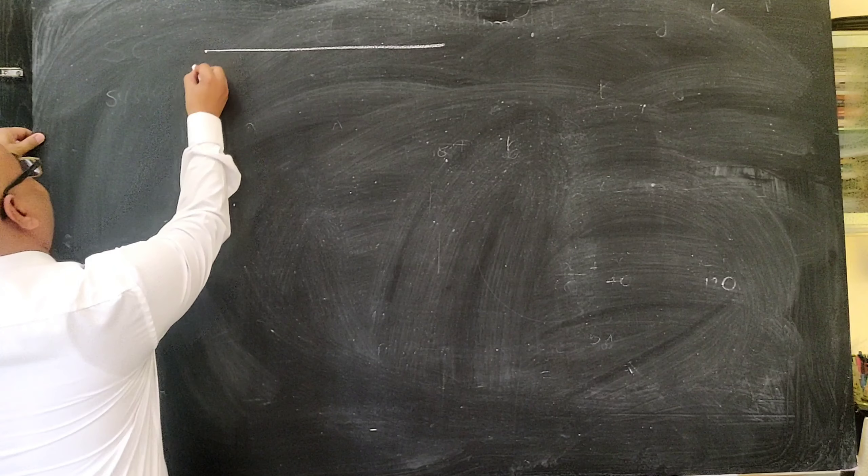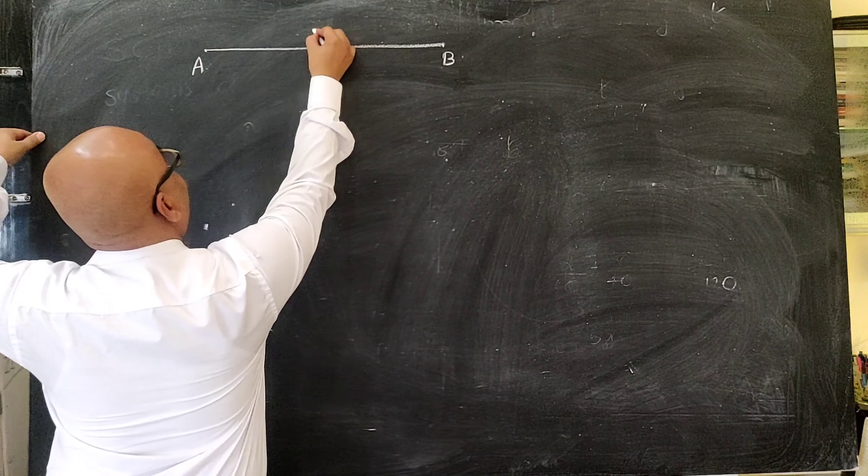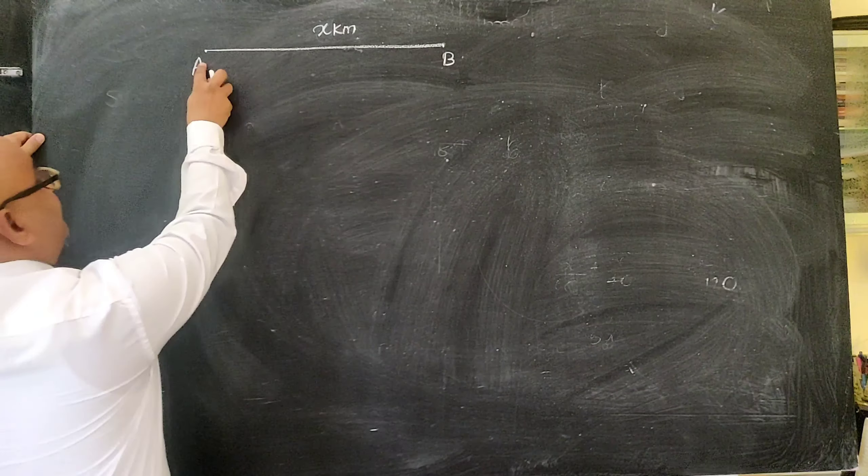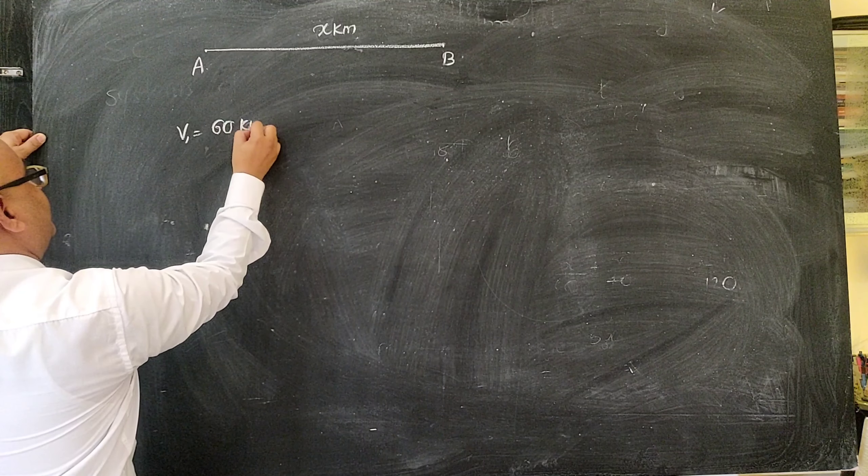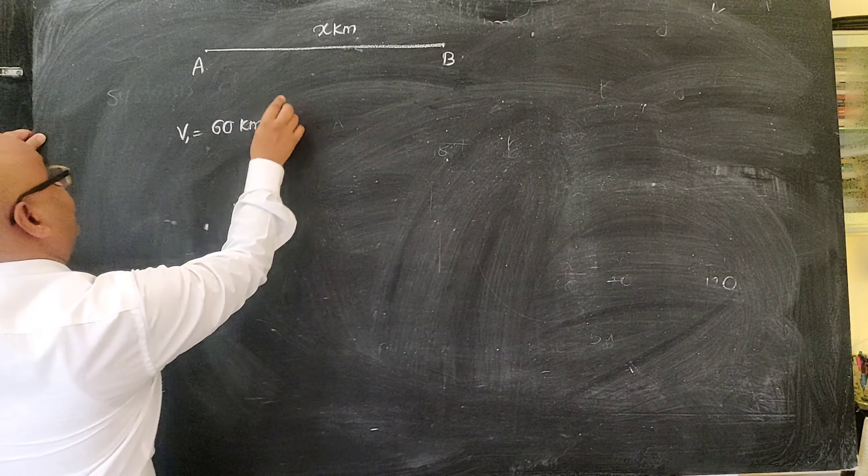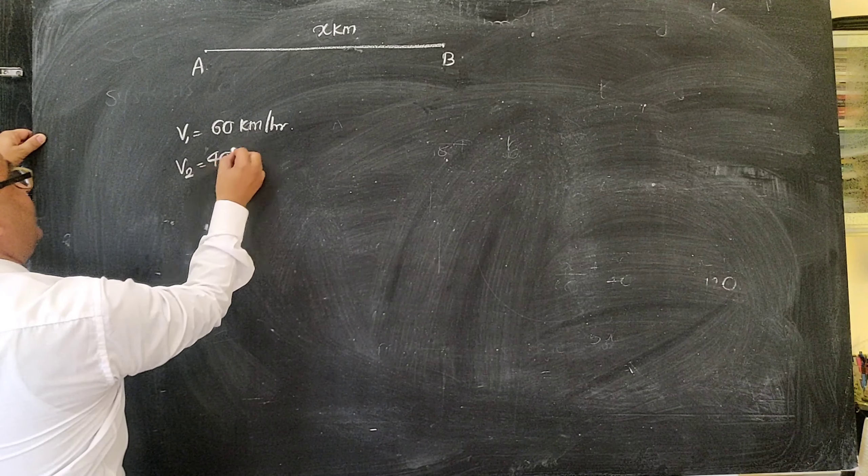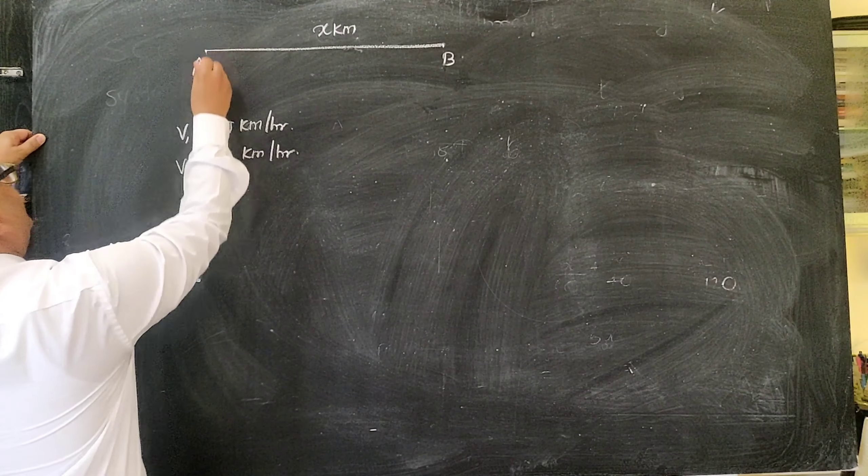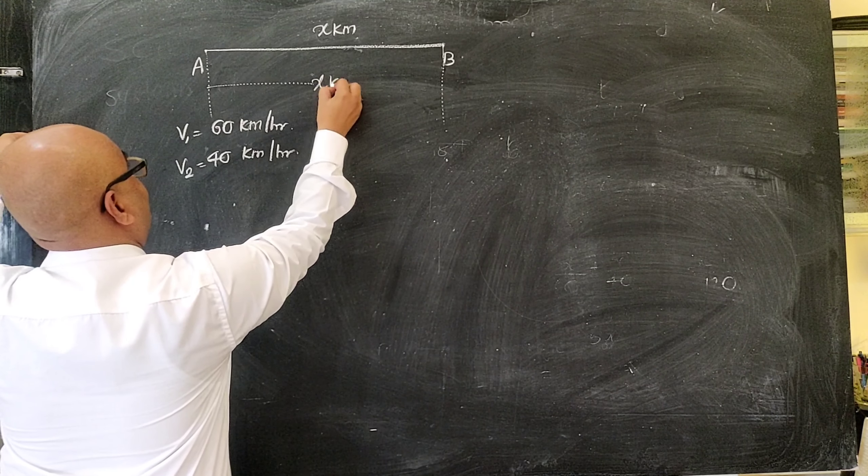Now let us assume that the distance between A and B is x km. When a car travels from A to B, its speed was 60 km per hour. And when it travels from B to A, its speed was 40 km per hour.